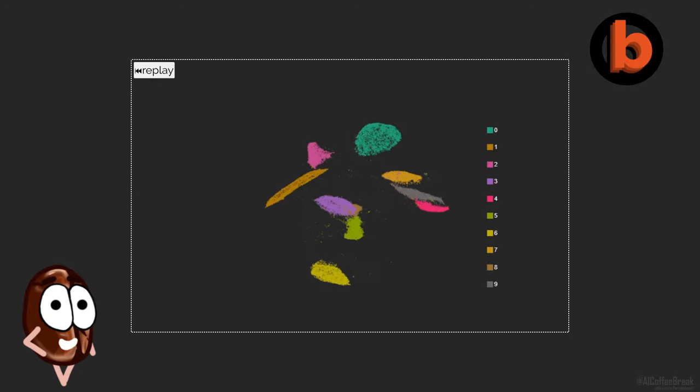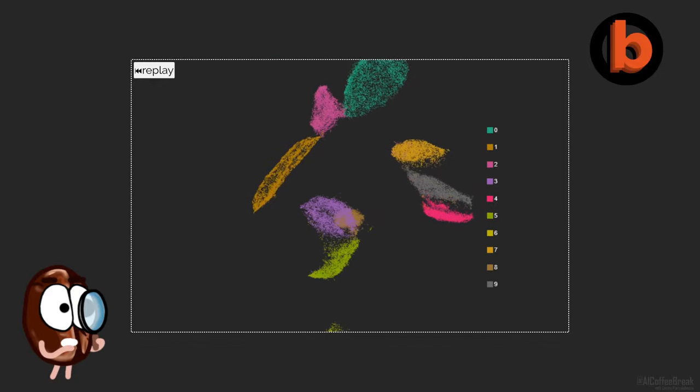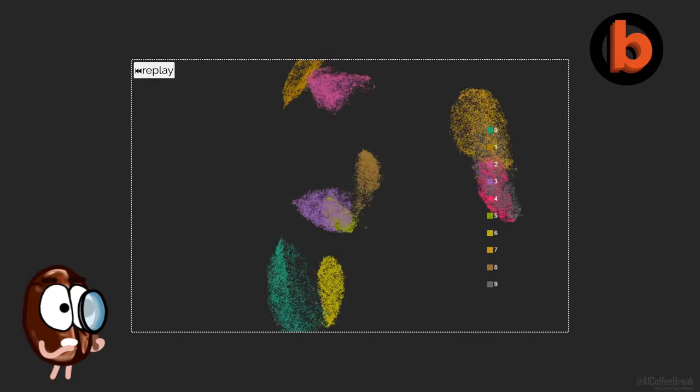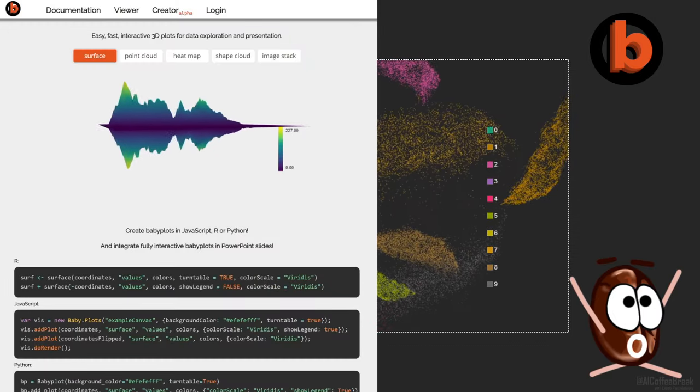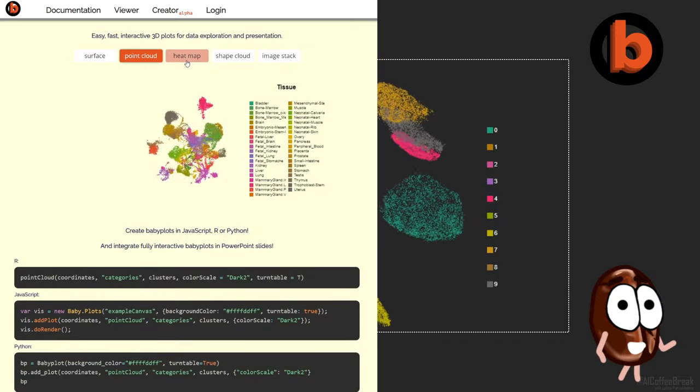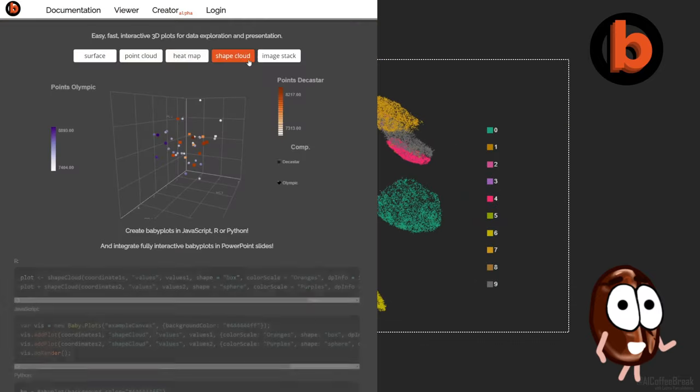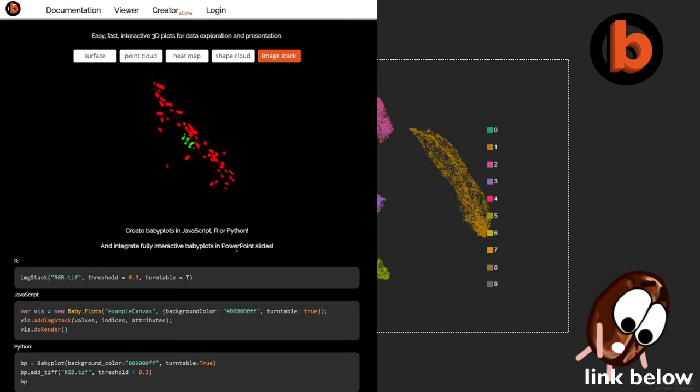Also, we can see how useful a 3D visualization can be over just 2D, where more complicated structures and relations can be visualized. If you want to visualize these things in 3D yourself, in either R, JavaScript or Python, and load your interactive 3D plots into a PowerPoint presentation to show to everybody, check out the Plotly website.